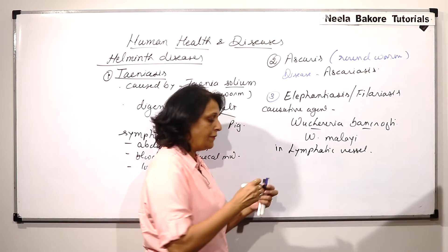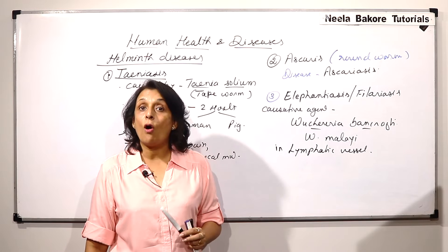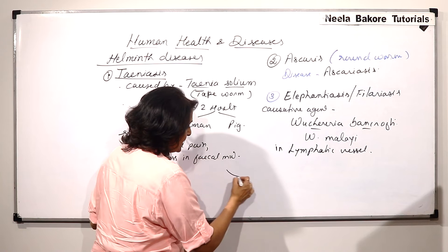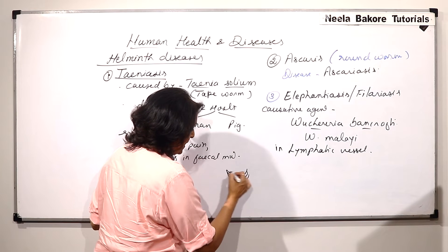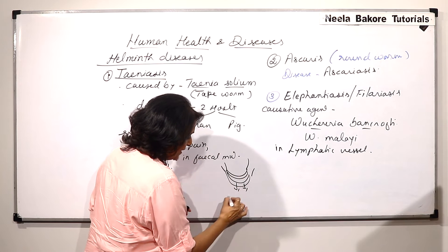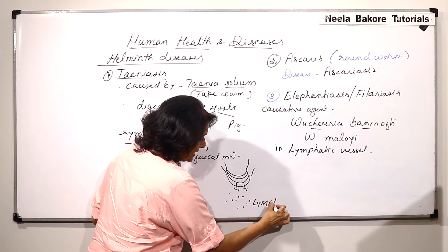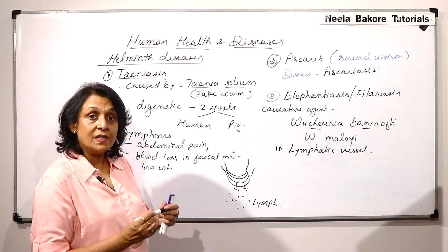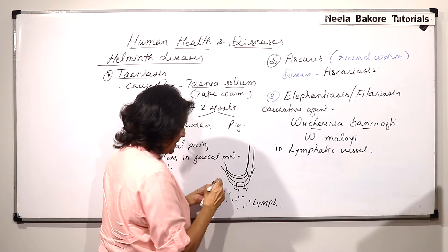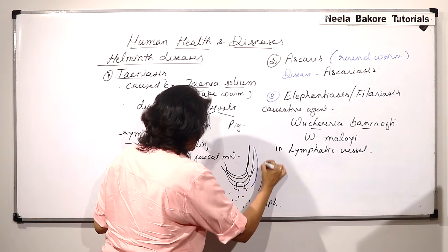Now, if it is in lymphatic vessel then that lymphatic vessel is going to get blocked. And we know that if this is the capillary, from the capillary plasma gets filtered and this lymph which is formed gets accumulated in the tissue.